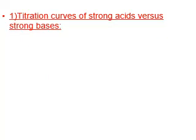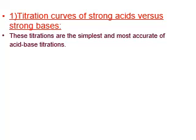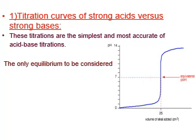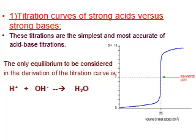The first titration curve we will study together is the titration curve of strong acid versus strong base. The titration curves of strong acids versus strong bases are the simplest and most accurate of acid-base titrations. Strong acids and strong bases are completely ionized — 100% ionized — so the only equilibrium to be considered in the derivation of these titration curves is the equilibrium of the ionization of water.